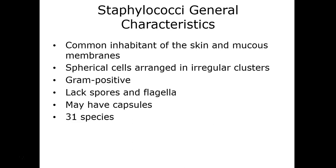We're going to start with the staphylococci and talk about some of the overall characteristics of this genus. These are commonly found on the skin, areas like the nares around the nostrils, and in the mucous membranes. Staph implies they're clusters of cells — in this case, clusters of cocci or spheres. These are all gram-positive and do not have any flagella or the capability to produce spores. There are over 31 different species in this genus.